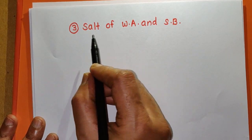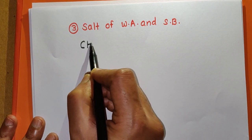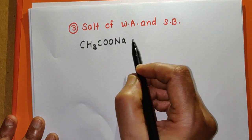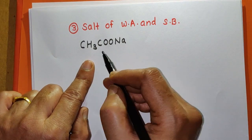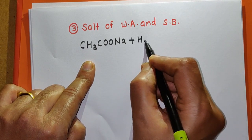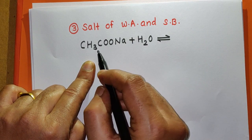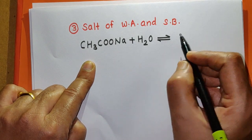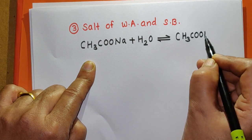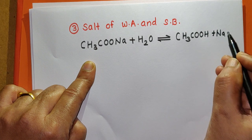The third type of salt is the salt of weak acid and strong base. For example, CH₃COONa, which is called sodium acetate, is the salt of weak acid and strong base. When it reacts with water, it gives the corresponding acid and base: CH₃COOH, which is called acetic acid, plus NaOH, which is the strong base.